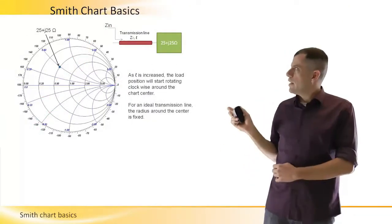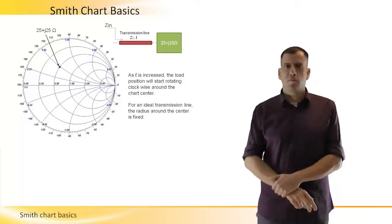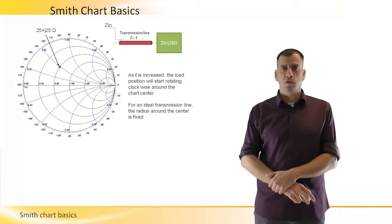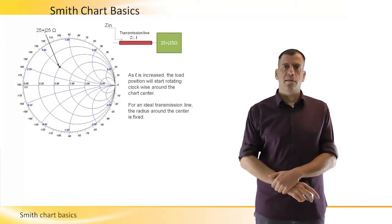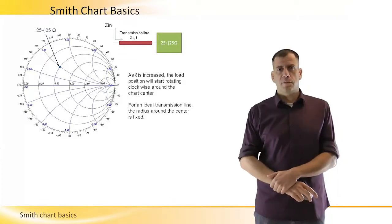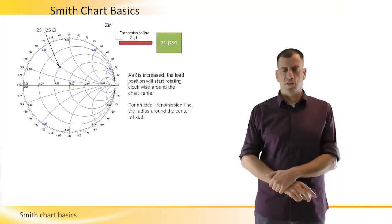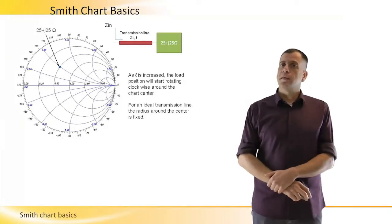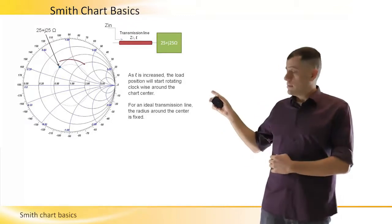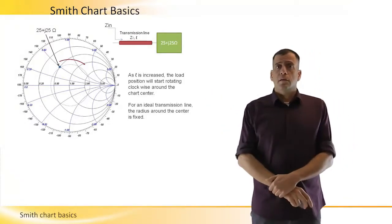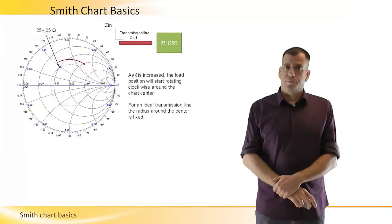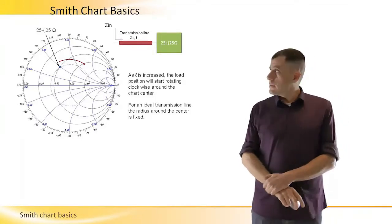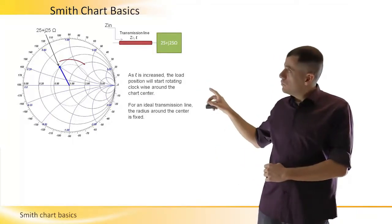Now here we have our 25 plus j25 ohm like before, and I ask what will happen to an impedance viewed on a Smith chart if we add a ZO transmission line at its terminal and measure our system including the transmission line. The impedance image will start rotating clockwise around the center of the Smith chart. Of course, assuming we have an ideal lossless transmission line, otherwise the radius of the movement will change.